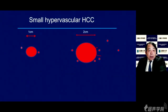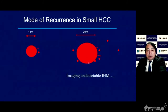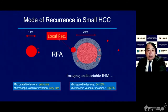In 2 centimeter sized HCC, imaging-undetectable satellite regions are present in 10% and microscopic vascular invasion in 27%. After ablation by radiofrequency ablation, imaging-undetectable intrahepatic metastasis can be detected as local recurrence several months later. However, 1 centimeter sized HCC can be completely cured by radiofrequency ablation. Therefore, detecting small lesions like 1 to 2 centimeters is very important.